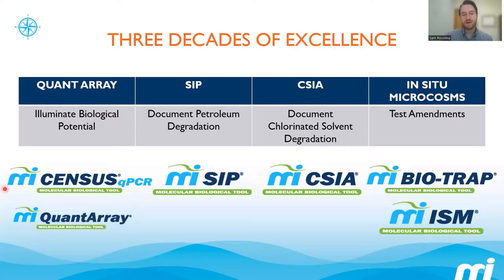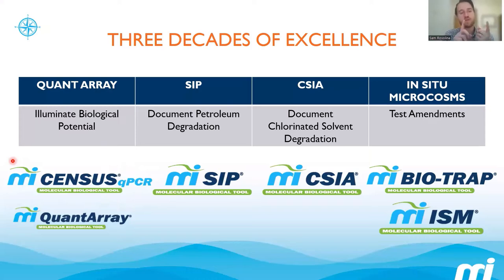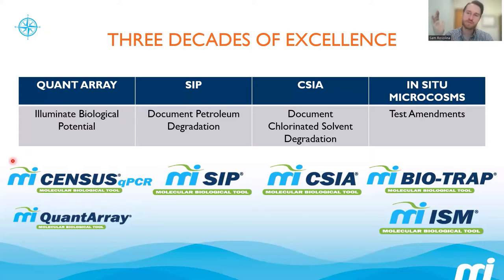The key analyses we offer are qPCR. What qPCR does is allow us to target specific gene segments of DNA. We look at taxonomic genes — who is there, which organisms are present — and functional genes — what tools do they have in their toolbox to better understand the potential for biodegradation at a site. We have hundreds of qPCR targets, which can be a little overwhelming if you're trying to choose which targets to look for at your site.